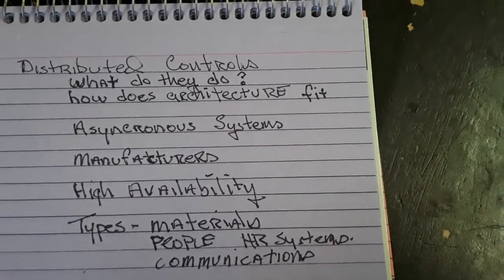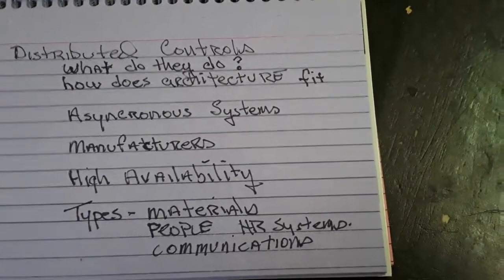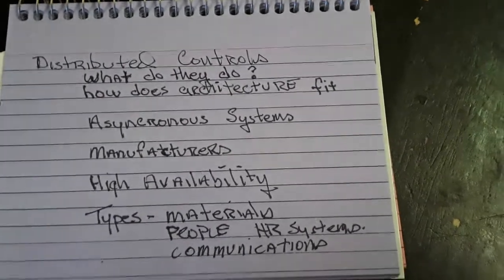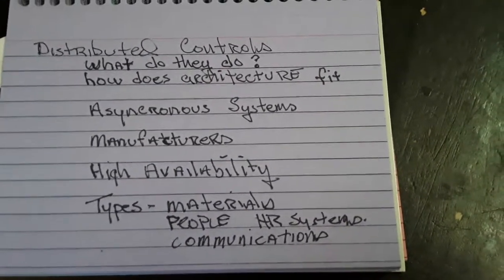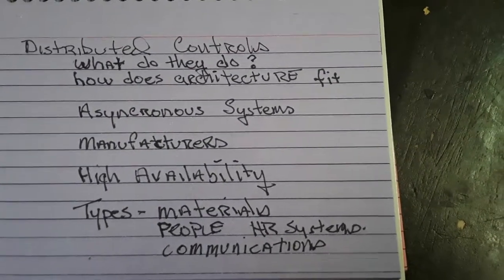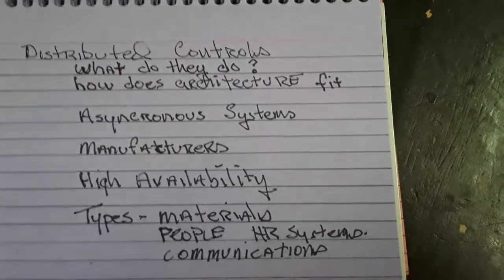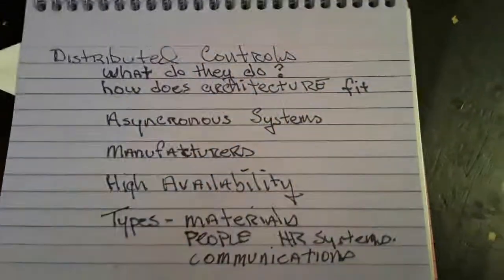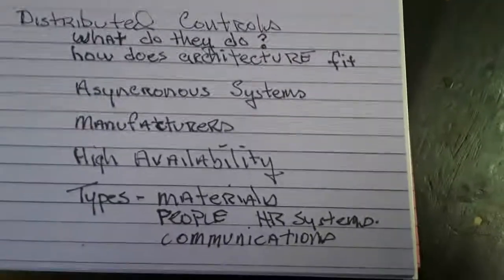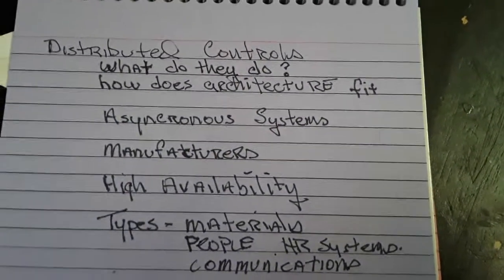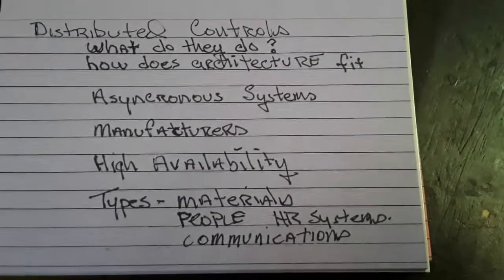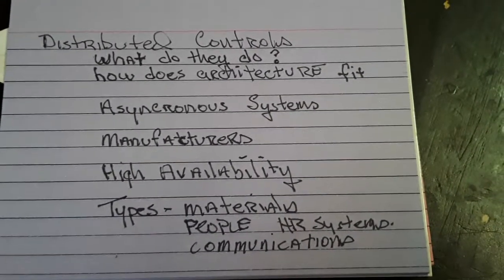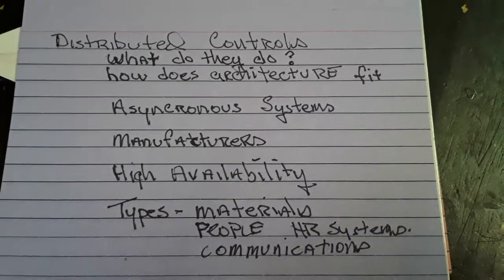Another big one is people. Distributed controls for people — how would that work? HR systems. There's something called SAP — S-A-P — SAP Enterprise Solutions. Become a master at that system. You have a project that requires 2,000 workers that aren't available locally because something's being built in the middle of nowhere. You've got to house them, feed them, and all the materials have to show up. HR systems can be huge things.